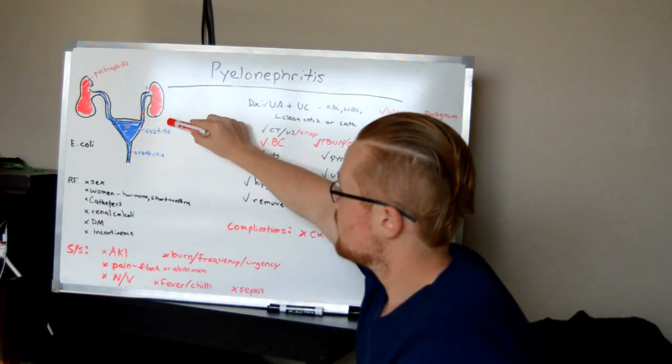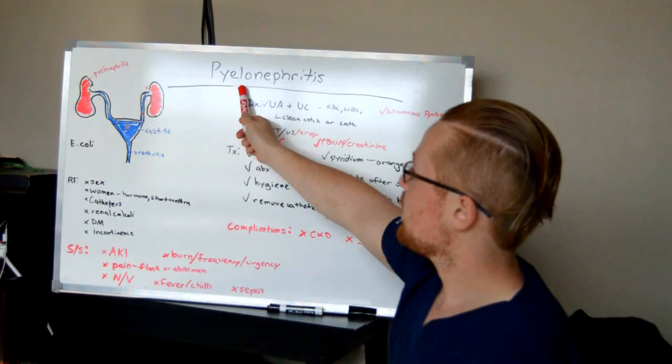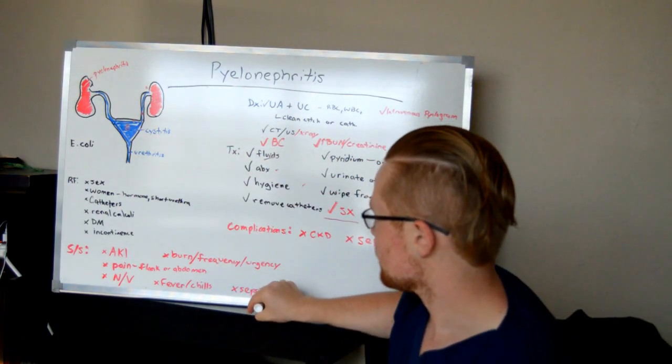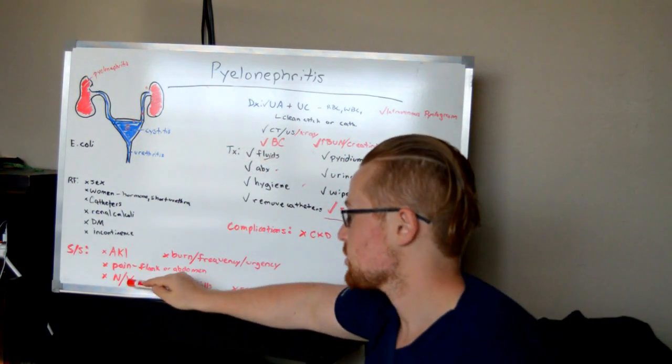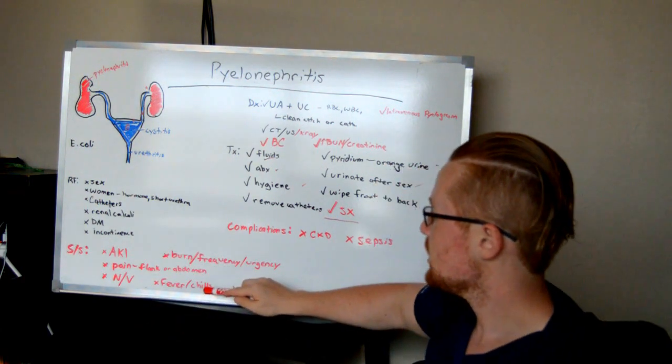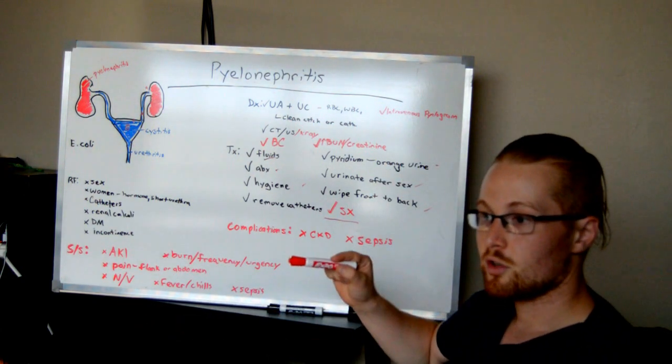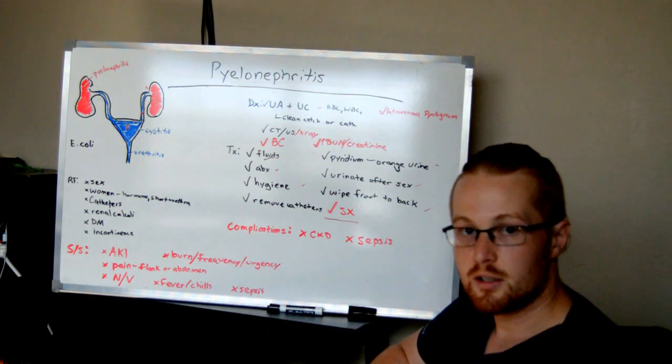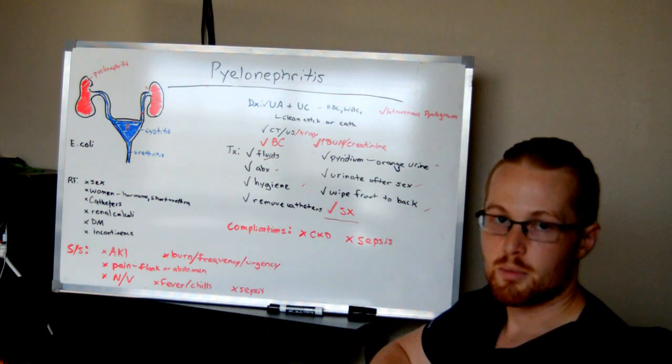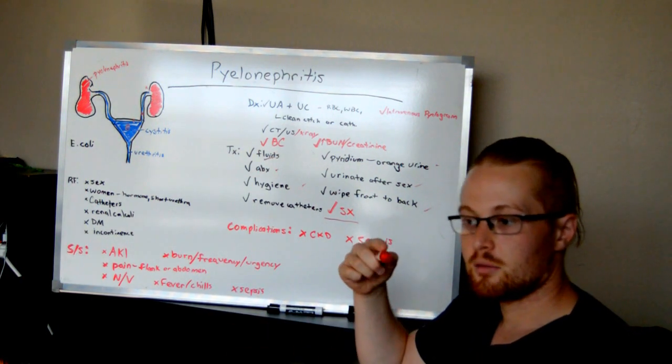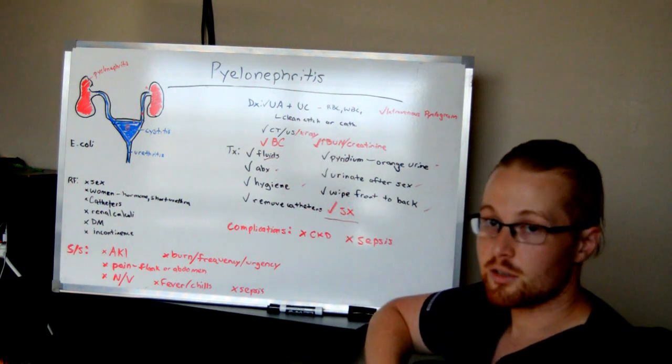Quick summary: with pyelonephritis, watch out for risks of sepsis. It's going to be more severe with nausea and vomiting, acute kidney injury, and chills. If you want to watch my urinary tract infection video, go ahead—it's my last video. So this is pyelonephritis.